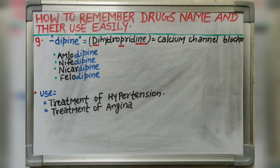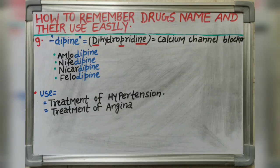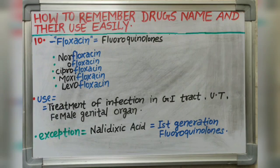Next suffix is -dipine. It belongs to the category dihydropyridine — the -dipine term is taken from 'di', 'py' and 'dine'. It is a calcium channel blocker. Drugs like amlodipine, nifedipine, nicardipine and felodipine belong to calcium channel blockers. It is used in treatment of hypertension and also in treatment of angina and heart-related chest pain.